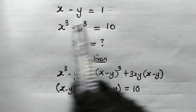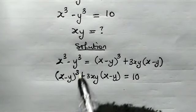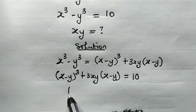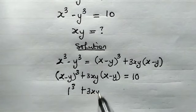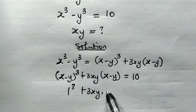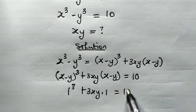Already we are given that x minus y is equal to 1, so we're going to substitute. So here x minus y cubed will be the same as 1 cubed. Then plus 3xy multiplied by x minus y, that is 1. Then this is equal to 10.